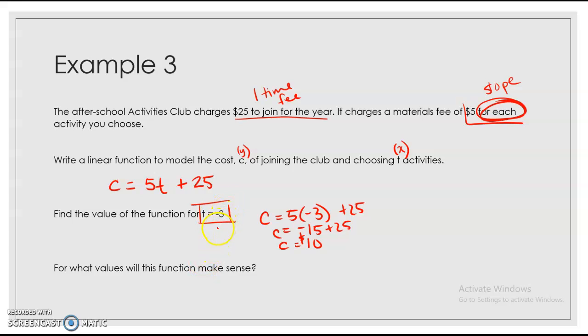Now, for what values does this function make sense? Now, I don't know if you did, but when I first saw that, T being negative 3, T's activities, how are you doing negative 3 activities? So really, what values will make sense for this function? Only positive values make sense. Only positive T values make sense because you can't choose negative activities. It just doesn't make sense.